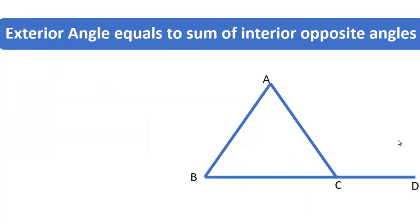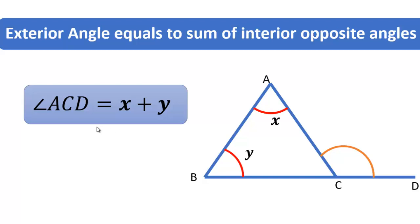The next property is exterior angle of a triangle is equal to sum of interior opposite angles. That means in this triangle angle ACD equals to sum of interior opposite angles CAB and ABC. That is, ACD equals to X plus Y. We will call it property two.